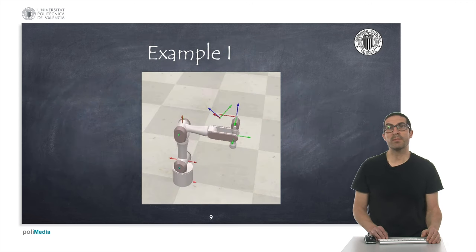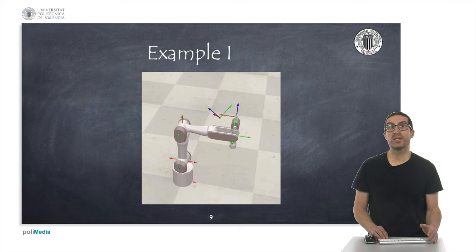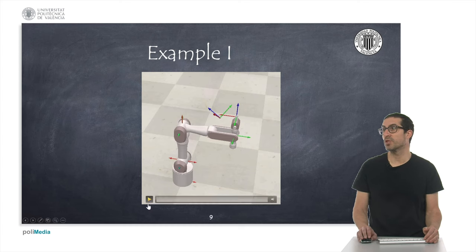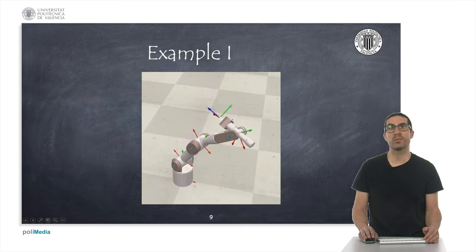Now let's see some examples of how the plugin solves the problem. I have prepared a set of examples where the target dummy is fixed to a given position and orientation, and a smooth trajectory is generated from the tip to the target using interpolation between positions and orientations. At each trajectory point, we solve the inverse kinematic problem and move the robot to the requested pose. In this first example, we can see the robot successfully moving with a smooth trajectory from the start position to the target position, reaching exactly the requested target.